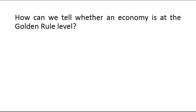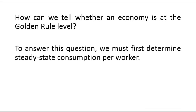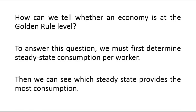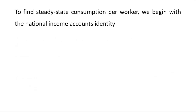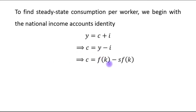To determine which steady state provides the most consumption, we must first find steady-state consumption per worker. We begin with the national income accounting identity: y = c + i, meaning output per worker equals consumption per worker plus investment per worker. Rearranging, consumption per worker c = y − i. Output y can be written as a function of capital per worker, f(k), minus investment.